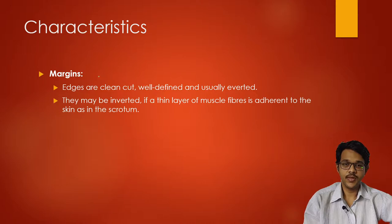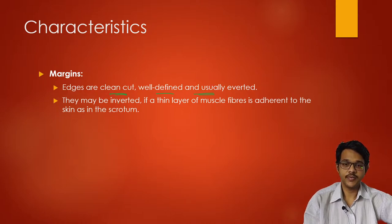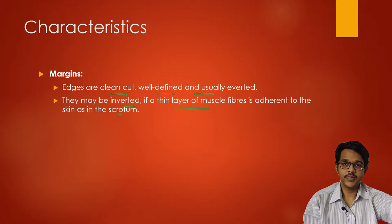Characteristics of incised wounds: margins or edges of incised wounds are clean cut, well defined and usually everted — meaning the skin edges come outward. They may be inverted if there is a thin layer of muscle tissue attaching the skin, like in the scrotum, where muscle fibers retract the skin inside the wound itself.